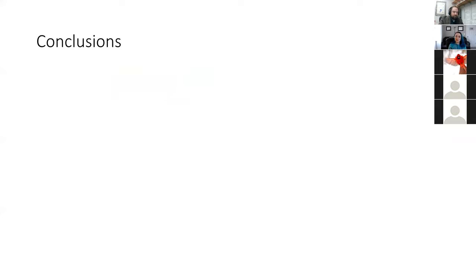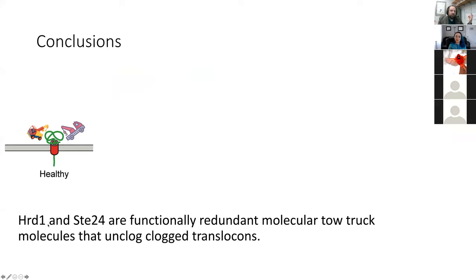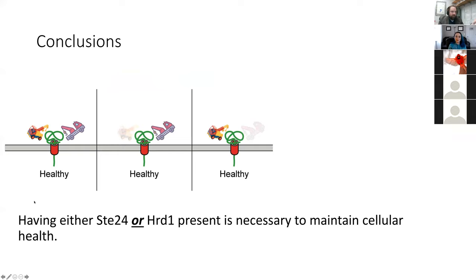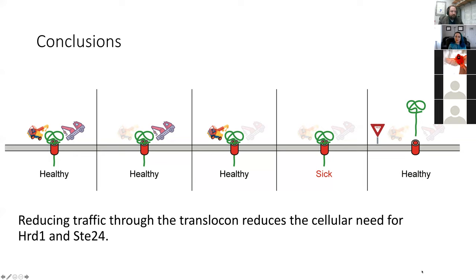So, what have we learned? HERD1 and C24 are functionally redundant molecular tow trucks that unclog clogged translocons. Having either HERD1 or C24 present is necessary to maintain cellular health, and cells lacking both HERD1 and C24 are sick. Reducing traffic through the translocon reduces the frequency of translocon clogging and therefore reduces the cellular need for these tow truck enzymes. And finally, ER stress — which is present in cells during multiple human diseases — blocks the ability of cells to unclog clogged translocons, revealing a previously uncharacterized consequence of this type of stress.